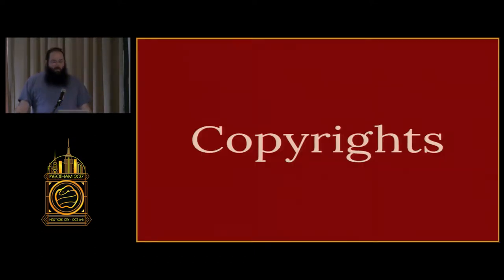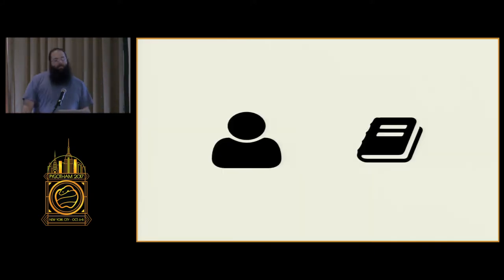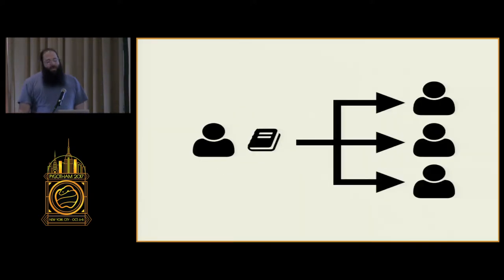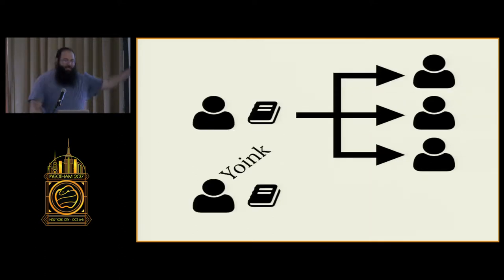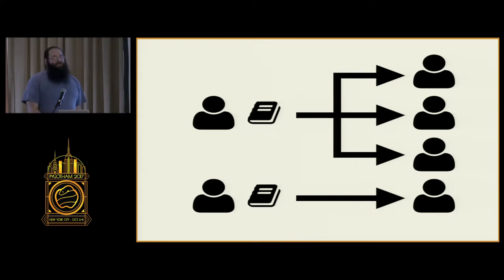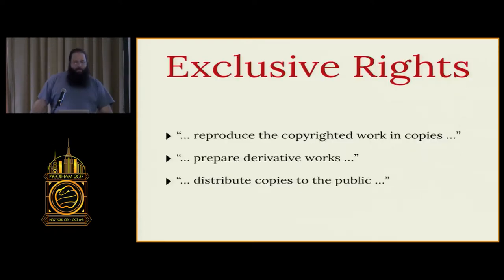Copyright is the most common form of intellectual property, so let's look at that one first. Meet Bob. Bob wrote a book. Bob sells copies of that book to a whole bunch of people who want to read it. But someone buys a copy of his book and they just start making copies and selling it themselves. If we want more people to write books, we need to prevent this, and thus was born copyright law.